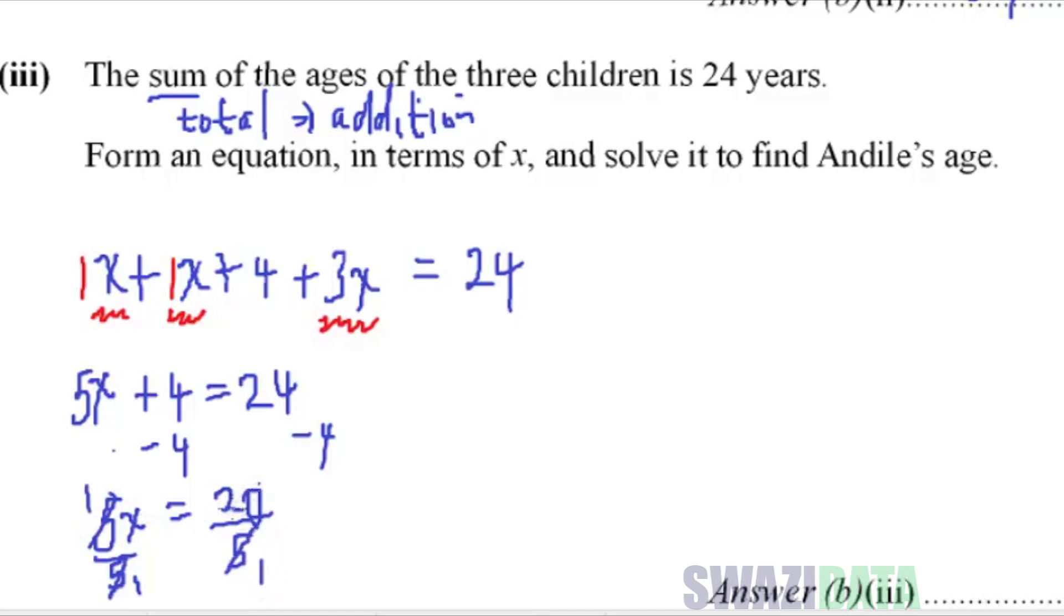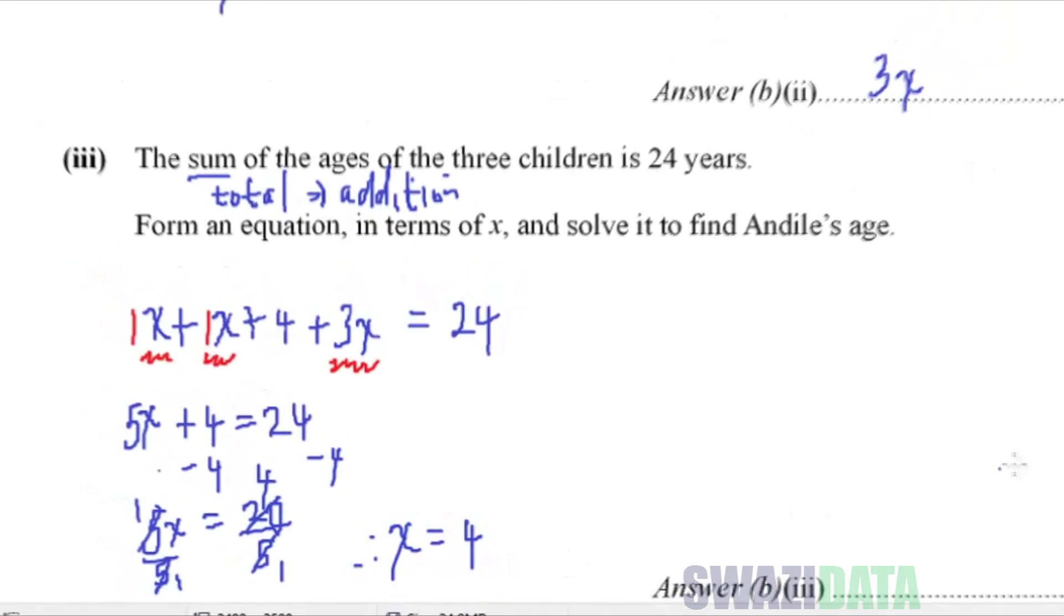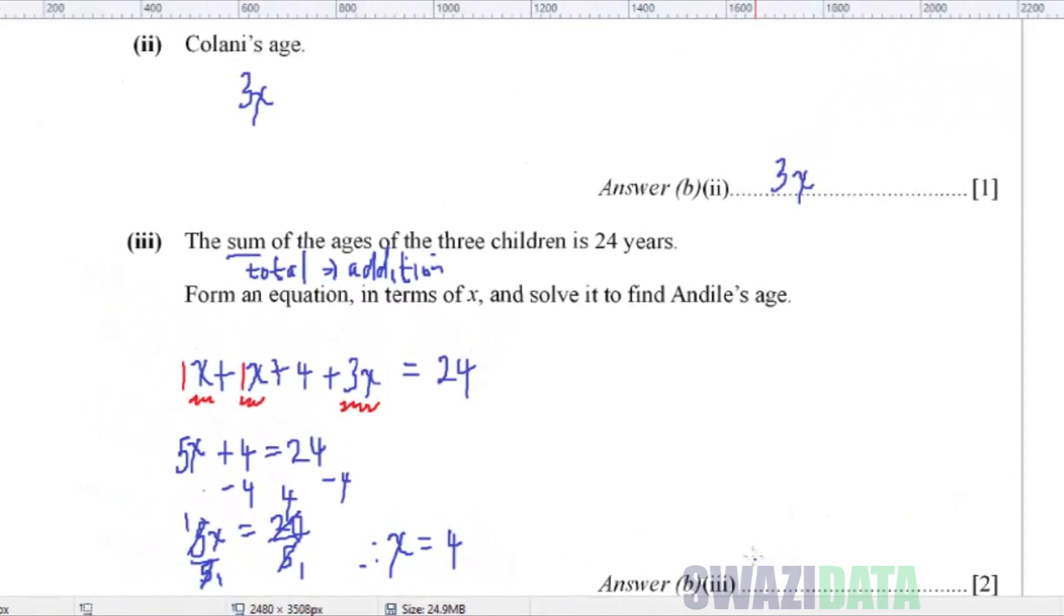It's 1, 5 into 20, it's 4. So we have our answer, X is equal to 4. Therefore, we know Andile's age. Andile is 4 years old.